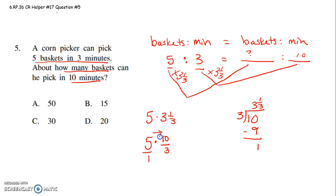You then would multiply straight across the top, straight across the bottom. 5 times 10 is 50. 1 times 3 is 3. Now we're going to do 50 divided by 3. How many times does 3 go into 50?